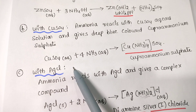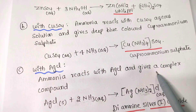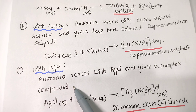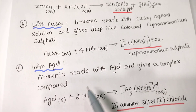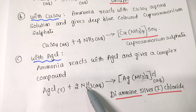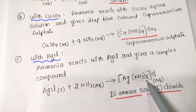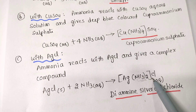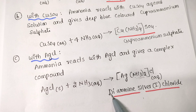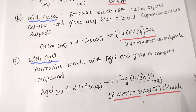With AgCl: ammonia reacts with AgCl and gives a complex compound. AgCl solid plus 2 moles of ammonia gives [Ag(NH3)2]Cl. The name of this complex is diamine silver(I) chloride.